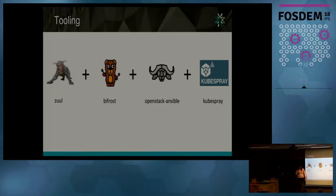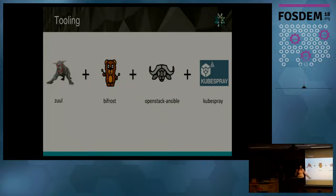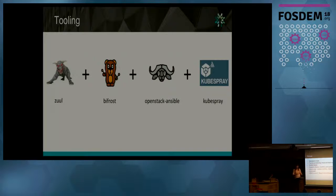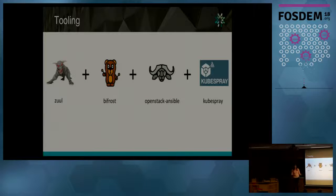Now I'm going to talk about the tooling we are using. We have different components: Zuul, Bifrost, OpenStack Ansible, and KubeSpray. Zuul is what we are using for project gating — all the changes created in a project go through these pipelines to verify that the jobs are working and that they are ready to be merged. Once Zuul runs all the jobs and they pass through the gate pipeline, after passing all checks, the code is merged. You can also trigger another set of jobs for package building or publishing after that.